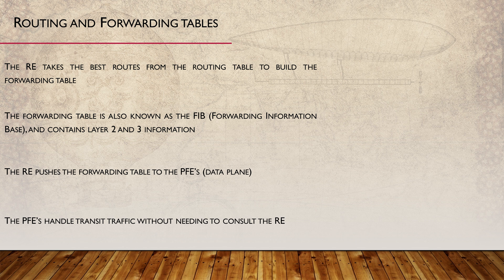Do you see the distinction between the routing table and the forwarding table? The routing table contains all valid routes and is stored in the RE. The forwarding table contains the best routes and is stored in both the RE and the PFE. The forwarding table is more than just layer 3 routes though — it also contains layer 2 and layer 1 information. This is so the PFE knows which destination MAC address and interface to use for egress traffic. This model, along with specialised hardware, makes forwarding very fast.